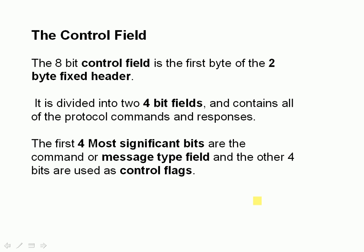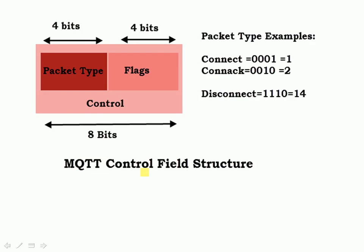Now let's look at the control field. The control field is the first 8 bits sent on the wire and it consists of two 4-bit fields containing the protocol commands and responses. The first 4 most significant bits are the command and the other 4 bits are used as control flags. For a connect message you have 0001 in the packet type field, and for a connect acknowledge message you have 0010 in the packet type field.